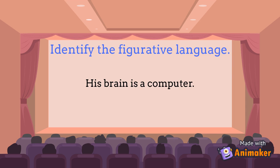Try this one: 'His brain is a computer.' Brain is being compared to a computer without using 'as' or 'like.' Therefore, this is an example of a metaphor. The poet is simply saying that this person is very smart.